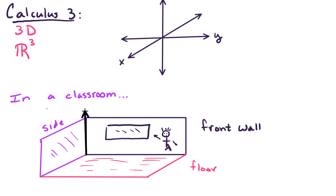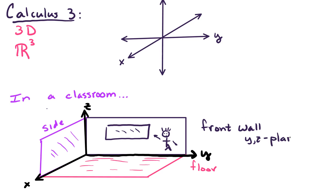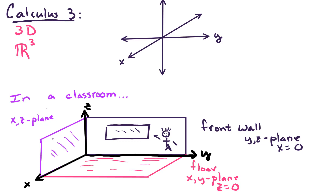Right up here, this vertical axis is what we mean by our z-axis. Going left and right, this is our y-axis. And then coming straight out towards you is what we mean by that x-axis. So this front wall we would refer to as the yz-plane, and in the yz-plane you haven't come out at all — in other words, x equals 0. The floor is the xy-plane, and we haven't lifted up in the z direction at all, so z equals 0. And over here on the side wall, this is the xz-plane, and in the xz-plane we haven't slid left or right at all, so y equals 0.